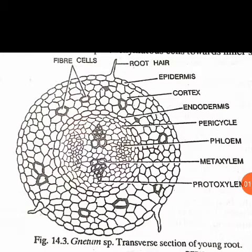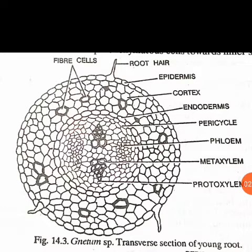Below the epidermis we can see the cortex. The epiblema or epidermis is followed by cortex, which is multi-layered. The cells are parenchymatous with few thick-walled fibrous cells. These fiber cells are scattered throughout the cortex and appear dark in color. The living parenchymatous cells of the cortex are either oval or polygonal and are filled with starch.